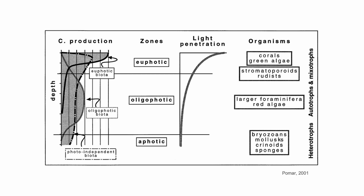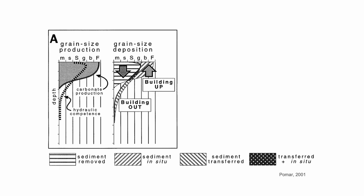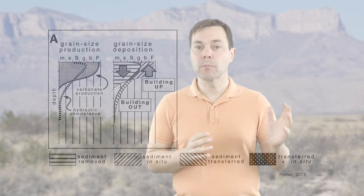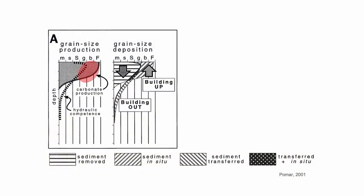How is that relevant to the shelf equilibrium profile? Imagine a system dominated by euphotic biota. Using the same hydraulic competence curve, production is focused at the top of the water column, ranging from mud — the T-factory produces a lot of mud — all the way to framestones. Everything plotting above the hydraulic competence line is kept in situ, so gravel, boulder, and framestone stay in place, building up the profile. All finer grains are transported and build out — in other words, prograding into the system.